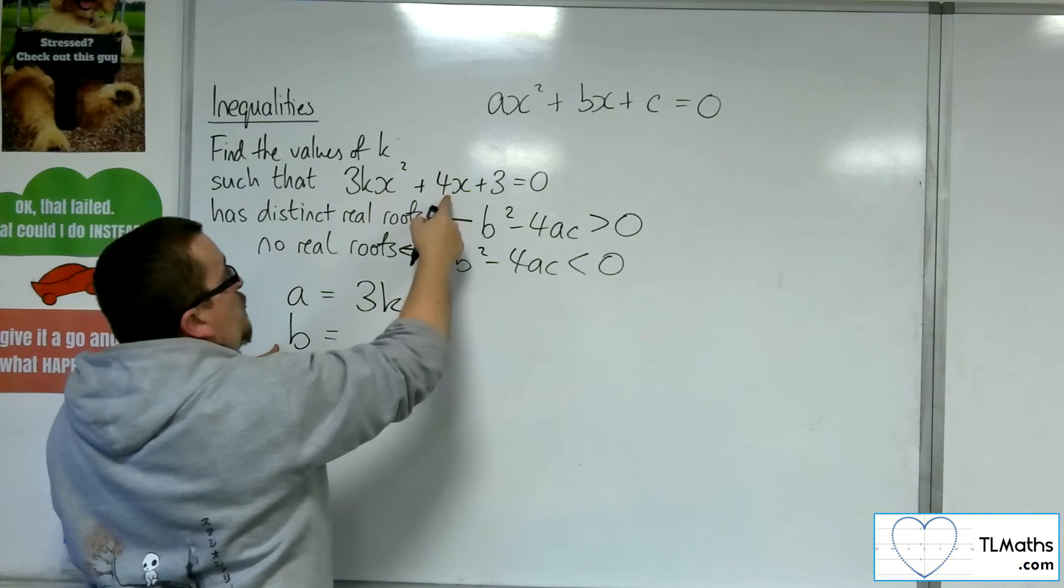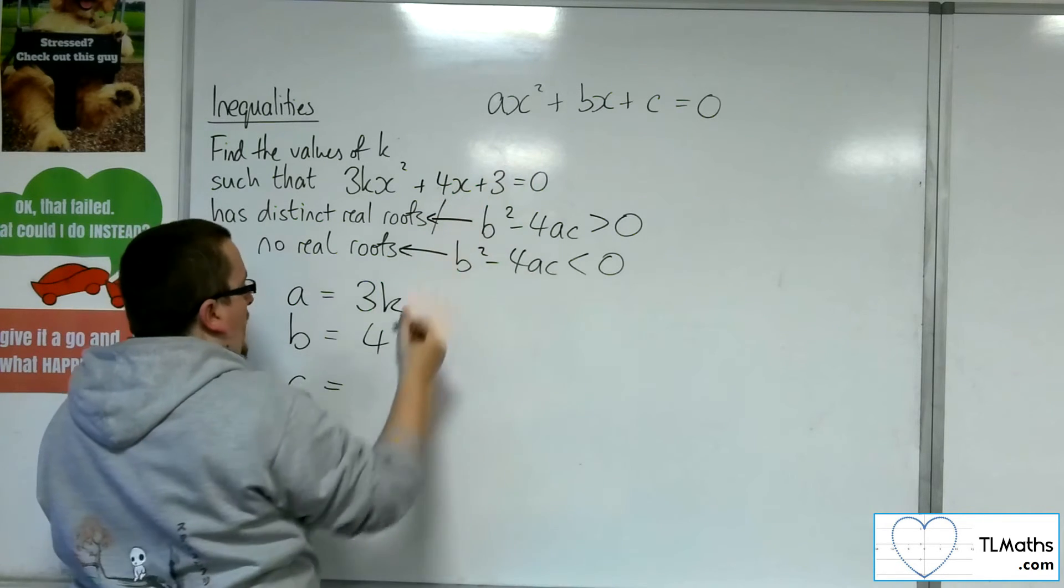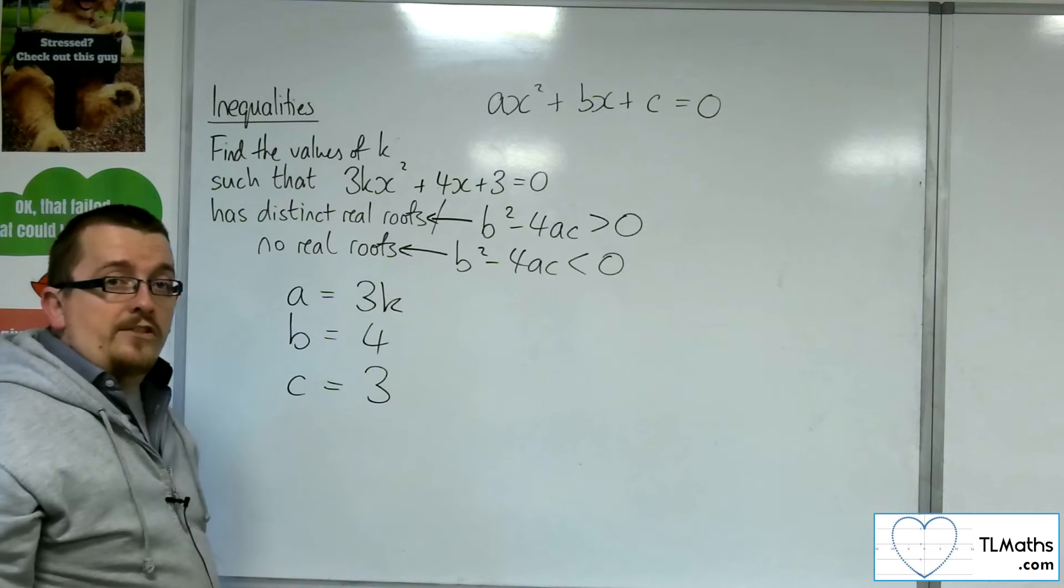The b is the number in front of the x, the coefficient of the x, which is 4. And the c is whatever is left over, and that in our case is 3.